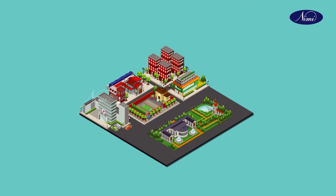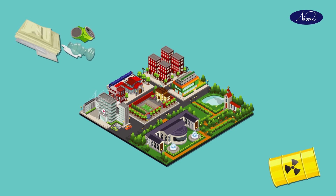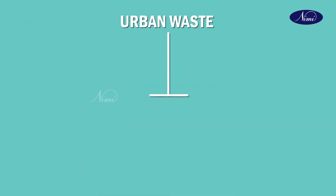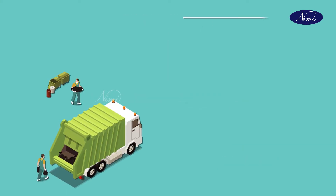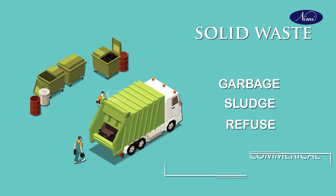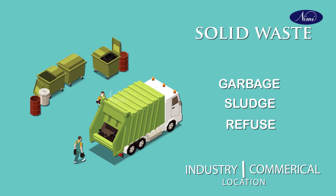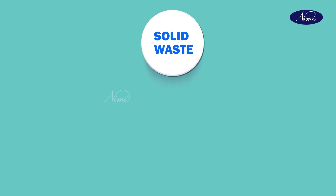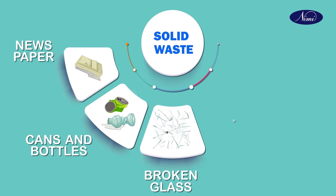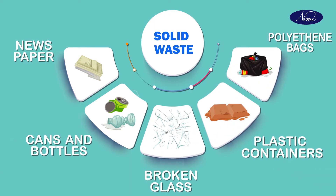Urban waste is the waste from household articles or from industries within municipal limits. It can be classified into two types. First is solid waste — any garbage, sludge, and refuse found in industrial and commercial locations, such as newspaper, cans, bottles, broken glass, plastic containers, polythene bags, etc.